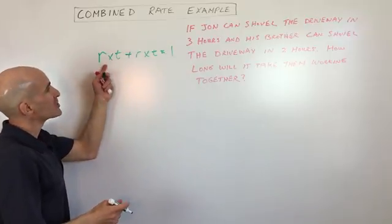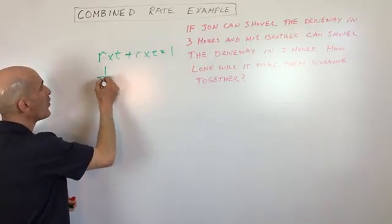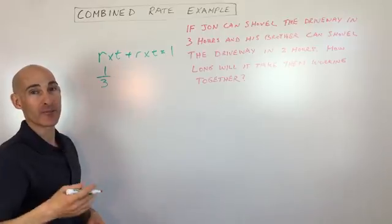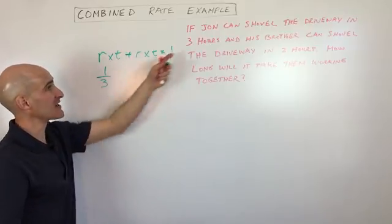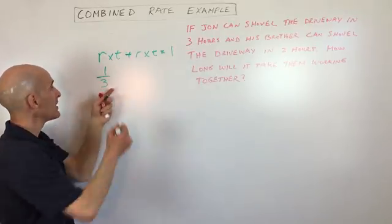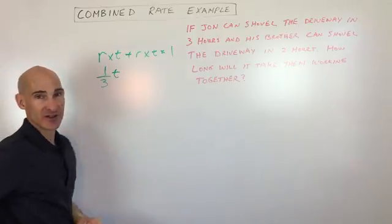Okay, so for John, his rate is basically one-third of a driveway per hour. Okay, because it takes him three hours to do the whole driveway, times the amount of time spent shoveling, right?